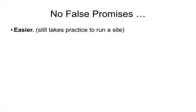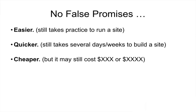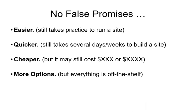Now, there are no false promises with Joomla. It is easier, but it takes practice to run a site. It is quicker to put up a Joomla site — if you've got your content developed, you can have a site up within a day. It is cheaper, but it may still cost hundreds or thousands of dollars to have a really great site developed. It is still much cheaper than buying a proprietary system that may or may not be supported down the road. And there are more options with Joomla. With over 7,500 extensions at extensions.joomla.org, you'll probably find exactly what you need. Everything is off the shelf, which means you're at the mercy of the extension developers.